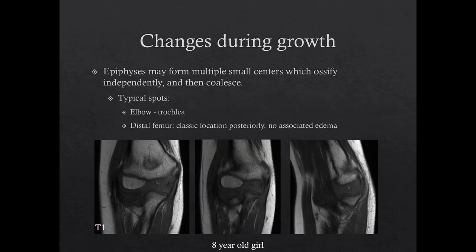Some epiphyses ossify by forming multiple small centers, which may have a fragmented appearance. During growth, these multiple small centers coalesce and fuse together, finally becoming one epiphyseal center. Typical spots where this occurs are the trochlea in the elbow, as in this 8-year-old girl, and the distal femur. You should not see any high T2 signal edema in these circumstances.